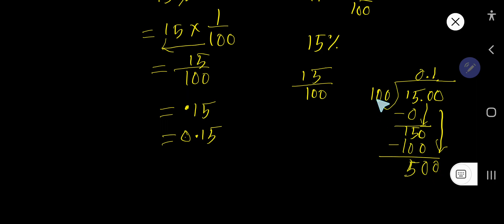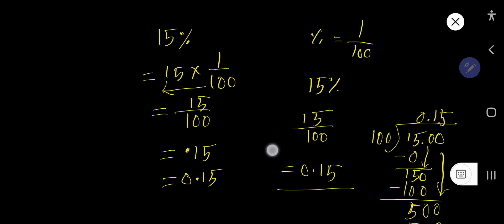500. 100 goes into 500 five times. 5 times 100 is 500. If you subtract, you get 0. That is 0.15.